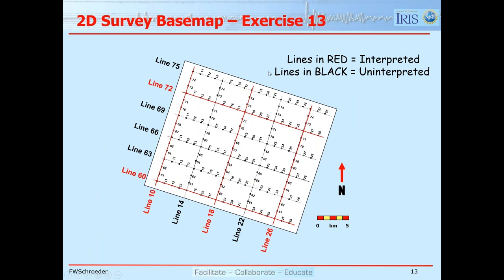This is the base map for exercise 13, with six east-west lines and five north-south lines. The lines with red lettering already have interpretation provided, which speeds up the exercise. If you were doing this on your own, with five lines already interpreted, you could probably map the Top Latrobe unconformity in about 40 minutes.